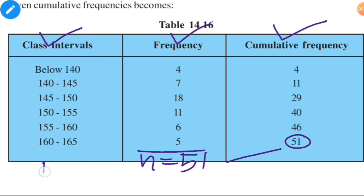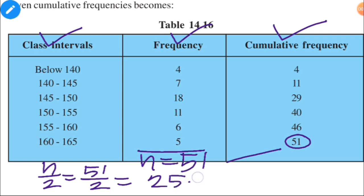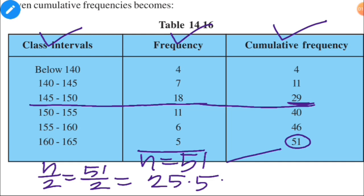To find the median class, we calculate n by 2: 51 divided by 2 equals 25.5. The median class is the class whose cumulative frequency is greater than and nearest to n/2. Since 25.5 lies within the cumulative frequency of 29, which is greater than and nearest to 25.5, the median class is 145 to 150.